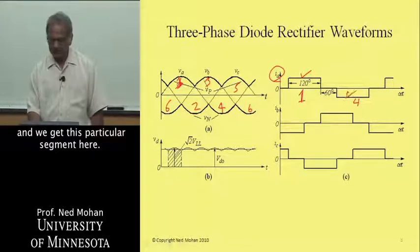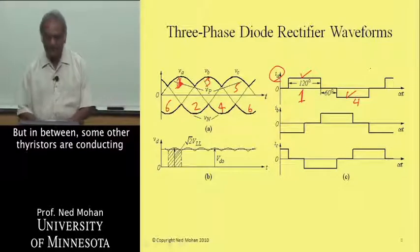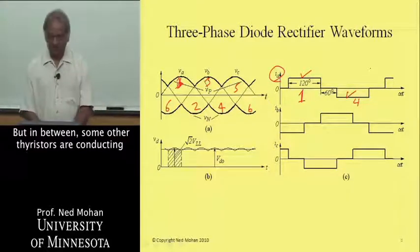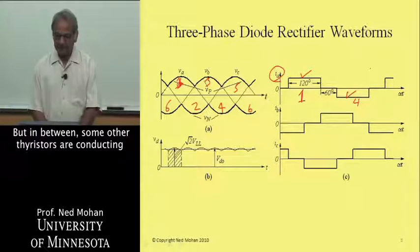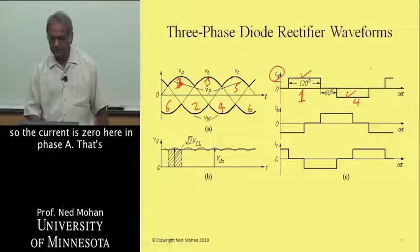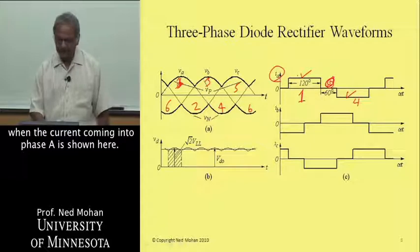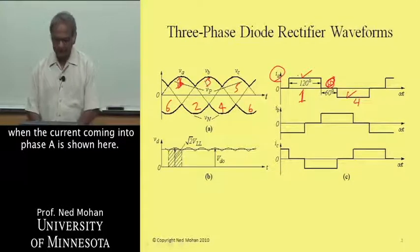We get this particular segment here. But in between, some other thyristors are conducting, so the current is zero here in phase A. As far as the current coming in to phase A, or through phase A, is shown here.